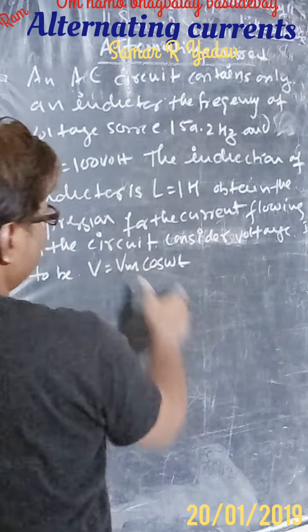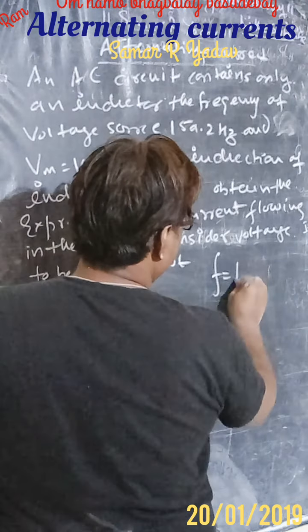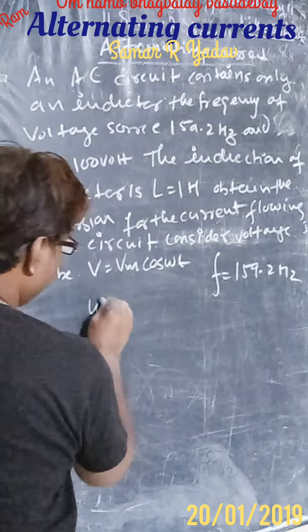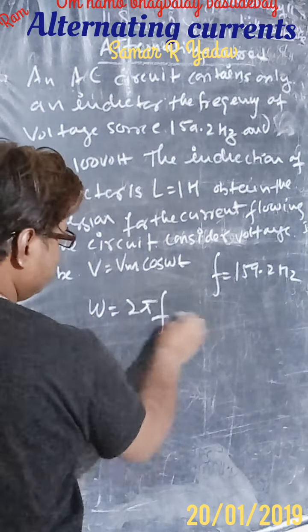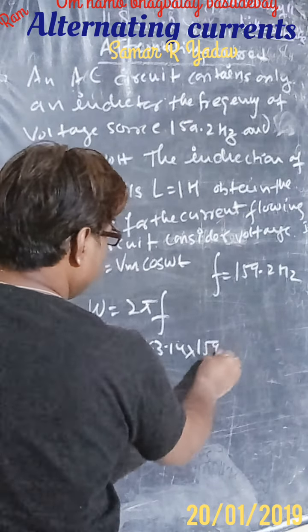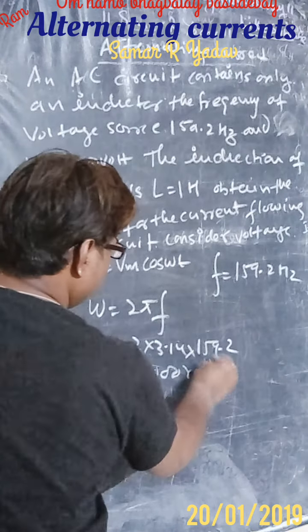Consider the voltage to be V equals Vm cos omega t. Now we know that frequency is given as f equals 159.2 Hertz. Omega equals 2πf, so equals 2 into 3.14 into 159.2, which equals 1000 radians per second.